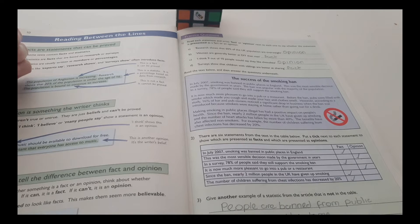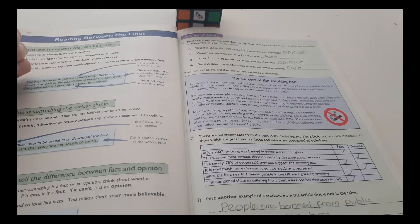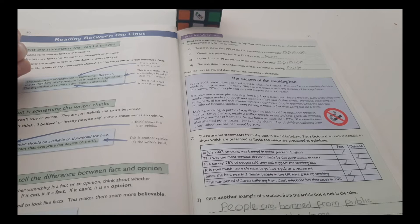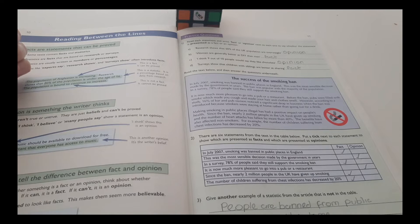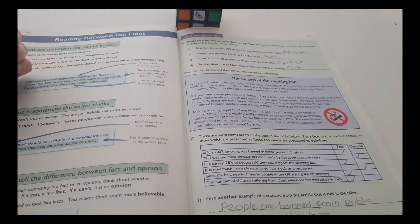Let's see. Read the text below and then answer the questions underneath. The success of the smoking ban. In July 2007, smoking was banned in public places in England. This was the most sensible decision made by the government in years.